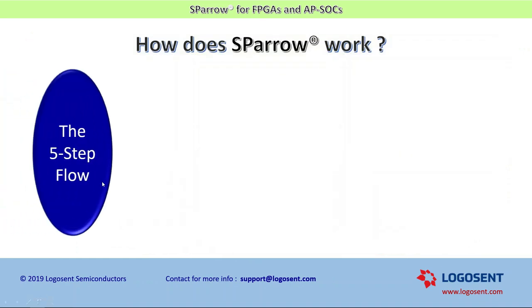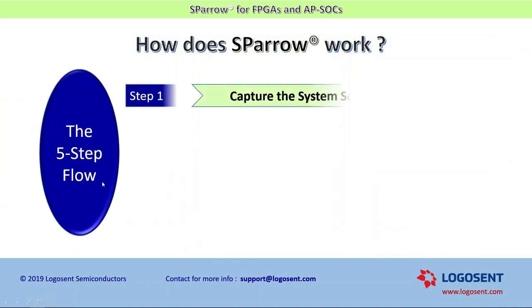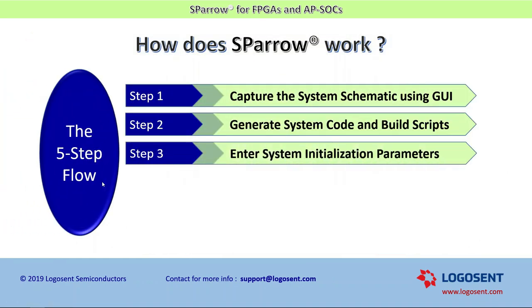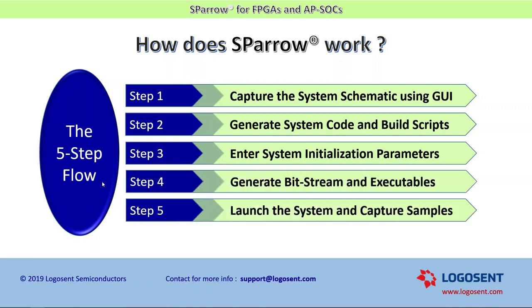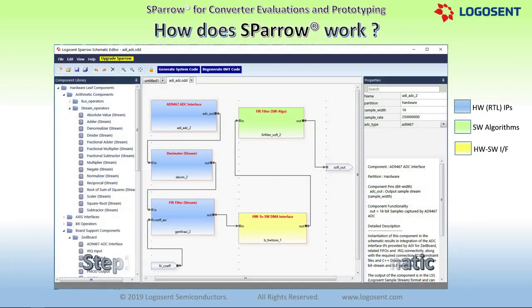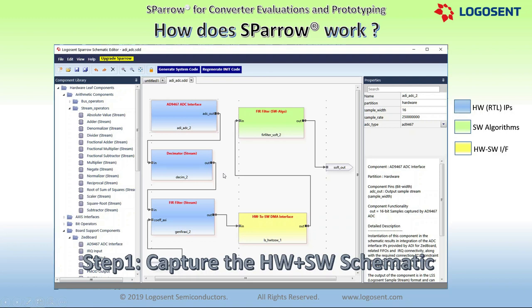How does Sparrow make it easy to generate integrated systems? There are five high-level steps to the Sparrow-based system code generation flow. Let us take a look at each of these five steps. The first step is to capture the system schematic using the highly intuitive Sparrow front-end graphical user interface.